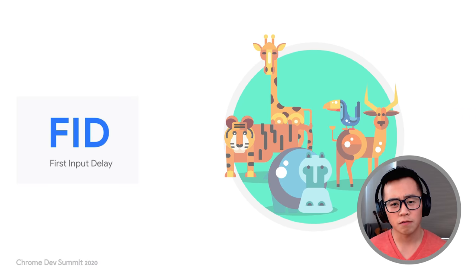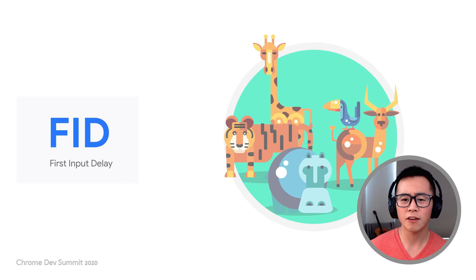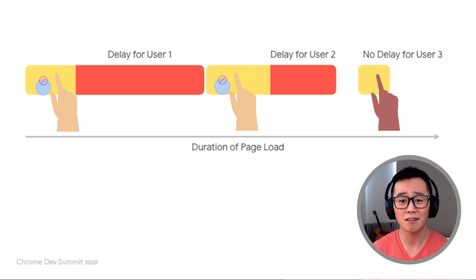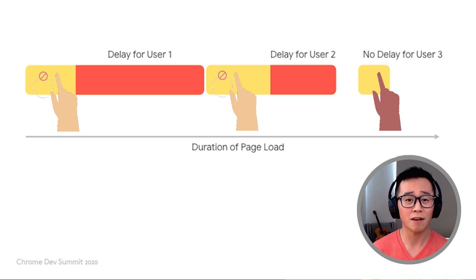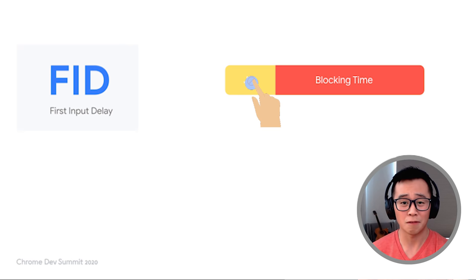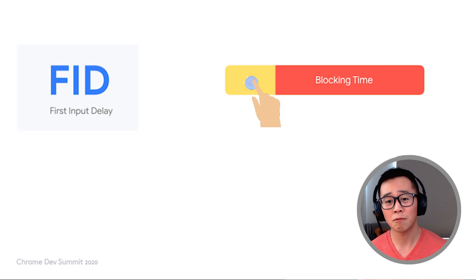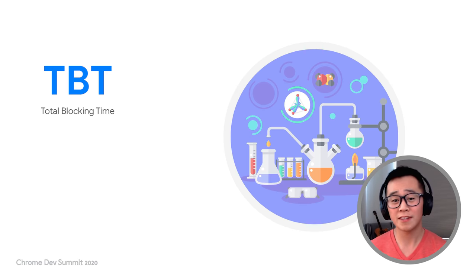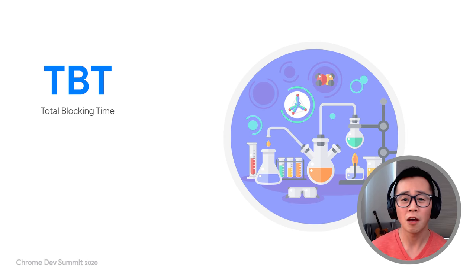A common question is: if FID is affected by many factors in the field, which metric can I use when developing and testing in the lab? The problem is that every single user is different — you can't generalize a test case in the lab that truly represents the field, as every user has their own choices on the page. Taking an average or median wouldn't make sense since values could be zero because they didn't hit a long task at all, or very high because they touched the page right in the middle of one. So instead, in Lighthouse and DevTools, we surface a companion metric for the lab called Total Blocking Time.